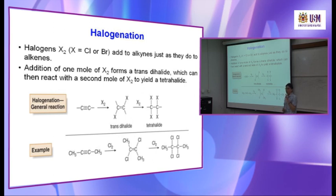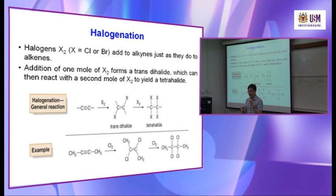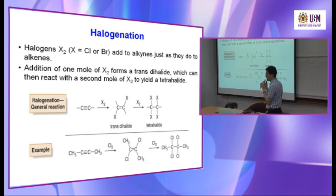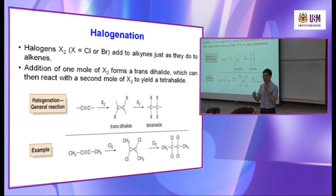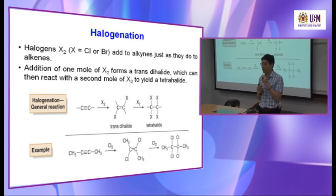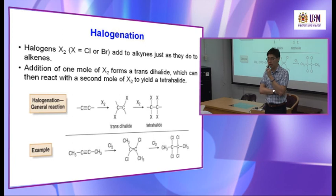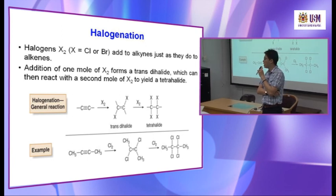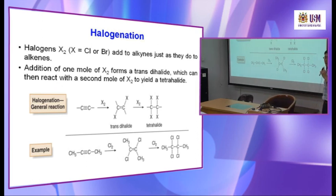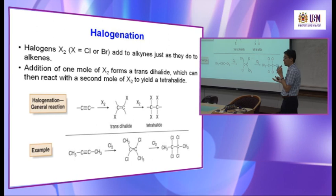After finishing hydrohalogenation (addition of HX), we continue with halogenation — meaning adding a halogen molecule (X2) into the alkyne. The mechanism is similar to that of alkene. It forms a three-membered halogen cation (similar to an epoxide), and the same mechanism and rules apply.